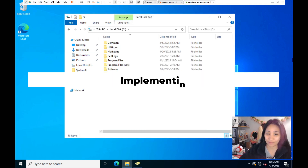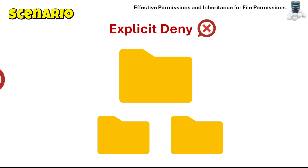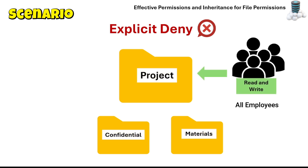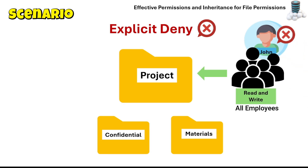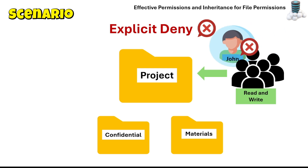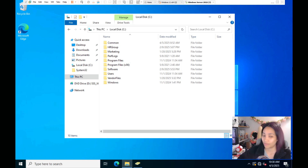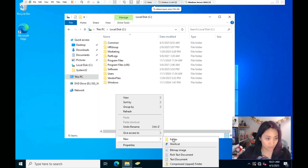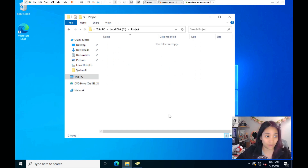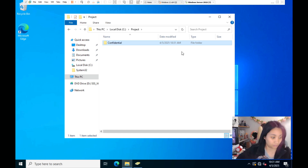For the next scenario, we'll practice implementing explicit deny in NTFS permissions. You are an IT administrator where all employees have access to a shared Project folder. However, the Confidential subfolder contains sensitive financial data that should not be accessed by John, a member of the Employees group. The Project folder has read and write permissions for all employees, and you need to block John from opening or reading the Confidential folder without affecting other employees' access. Let's create the Project folder, with subfolders Confidential and Materials.